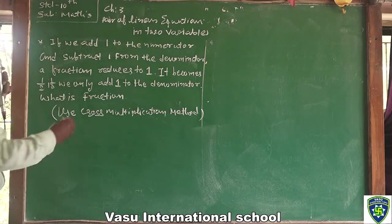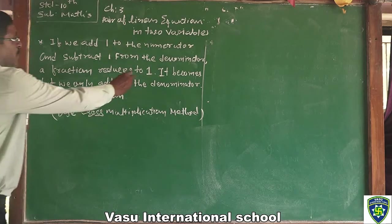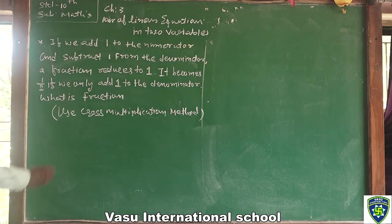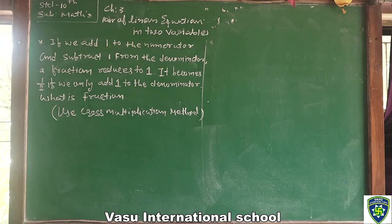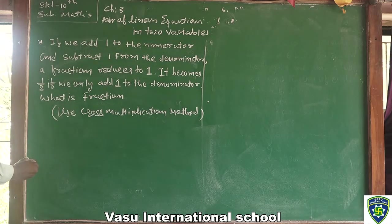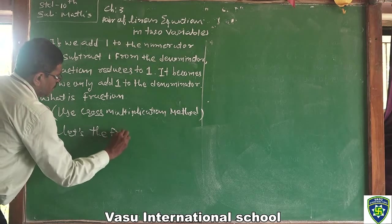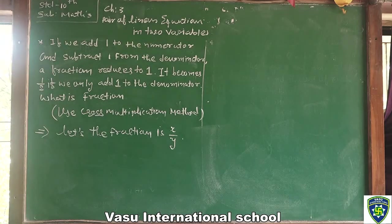Hello, good morning. Second problem: If we add 1 to the numerator and subtract 1 from the denominator, a fraction reduces to 1. If we only add 1 to the denominator, the fraction becomes one half. Find the fraction using the cross multiplication method. We read carefully and form a pair of linear equations. Let the fraction be x by y.